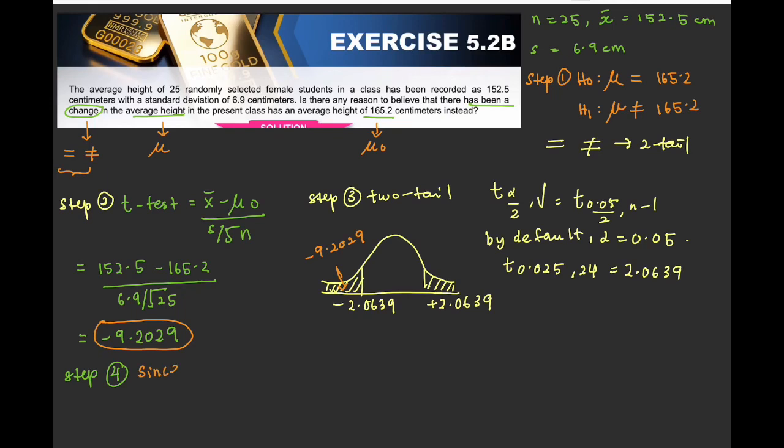Since T-Test equals negative 9.2029 is less than negative T 0.025, 24 equals negative 2.0639. Reject H now.